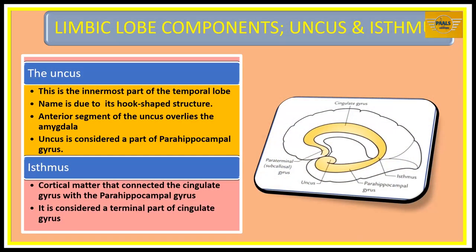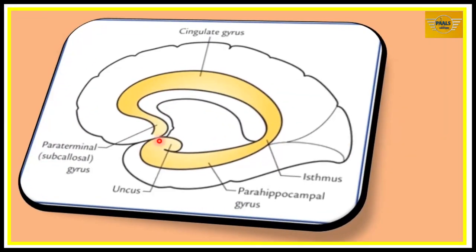The next parts of the limbic lobe are the uncus and isthmus. The uncus is the innermost part of the temporal lobe and is hook-like in appearance, which is why it is given that name. The anterior segment of the uncus overlies the amygdala. The uncus is sometimes considered part of the parahippocampal gyrus. The isthmus is a cortical matter that connects the cingulate gyrus with the parahippocampal gyrus, and is considered a terminal part of the cingulate gyrus.